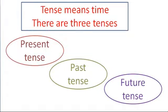Now the first question: what is tense? Tense means time. Matlab hume tense se samye ka gyan hota hai. There are three types of tense: present tense, that is jo abhi chal raha hai; past tense, bhoot kal jo ho chuka; and future tense, matlab ki jo aane wala hai.